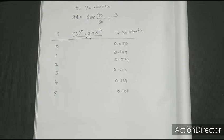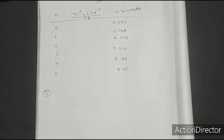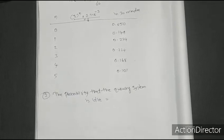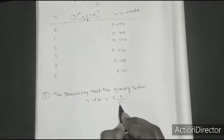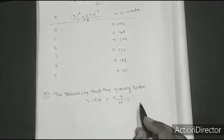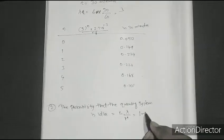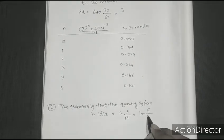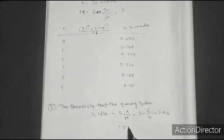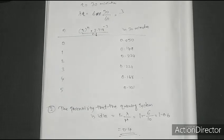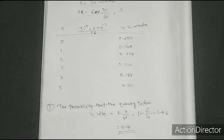For the second question, the probability that the queuing system is idle. The equation is 1 minus lambda divided by mu. Substituting: 1 minus 6 divided by 10 equals 1 minus 0.6 equals 0.4. So the probability that the queuing system is idle is 0.4.